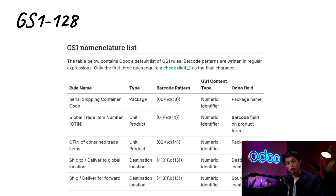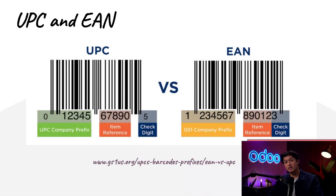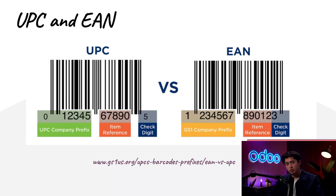If you'd like to learn more about the GS1 barcode nomenclature, feel free to check out our documentation linked in the description. UPC and EAN are numeric-only barcodes used in North America and Europe respectively.